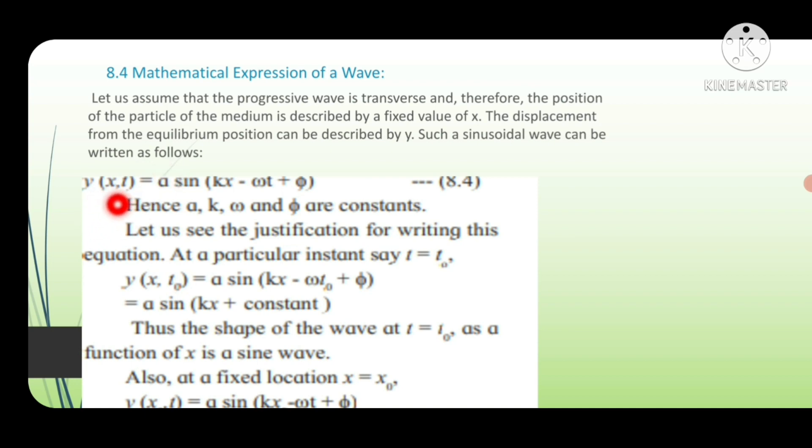y(x,t) = a sin(kx - ωt + φ). This means that the particle of the medium is described as a fixed value of x, and the displacement from the equilibrium position can be described by y.